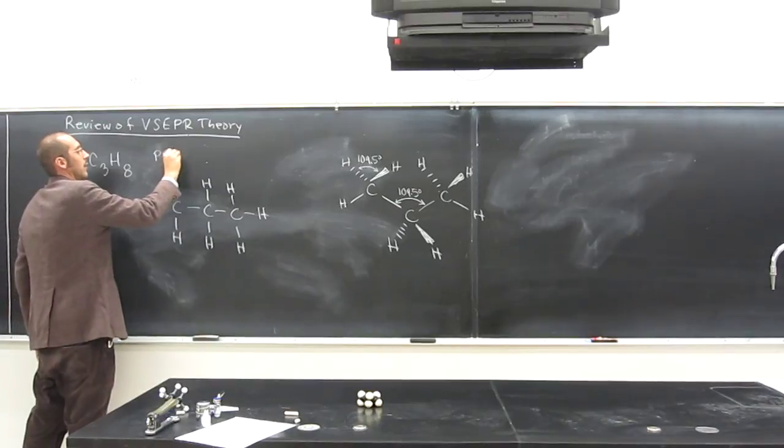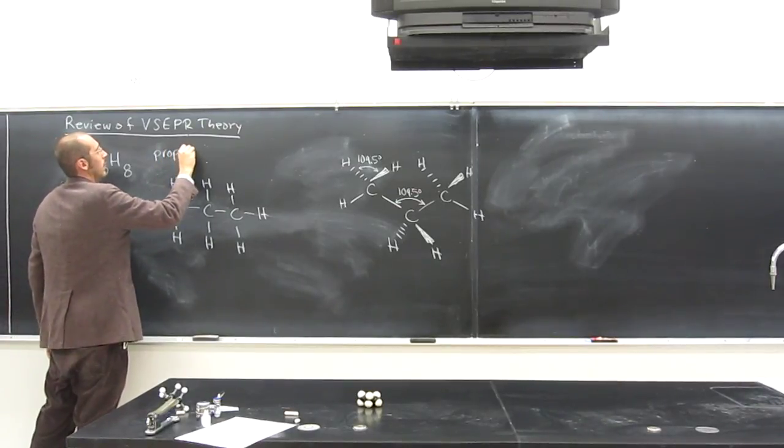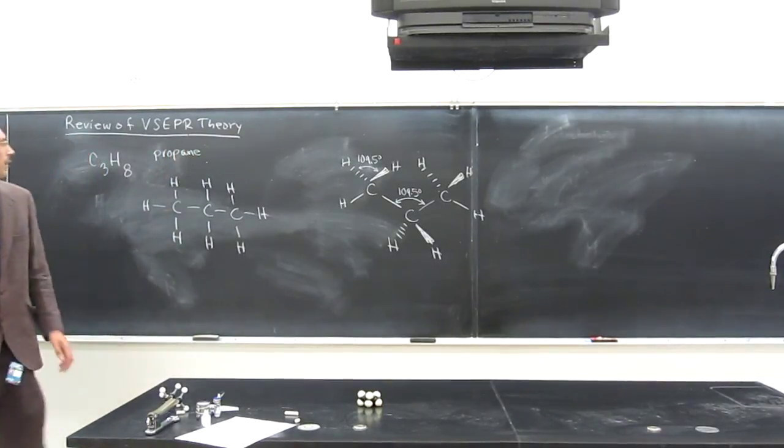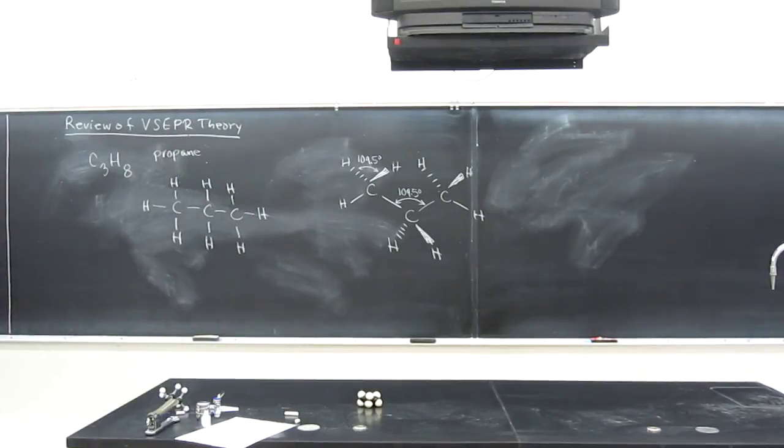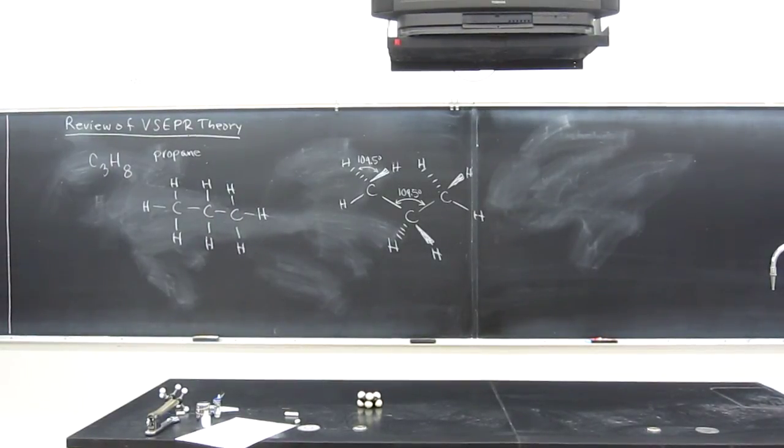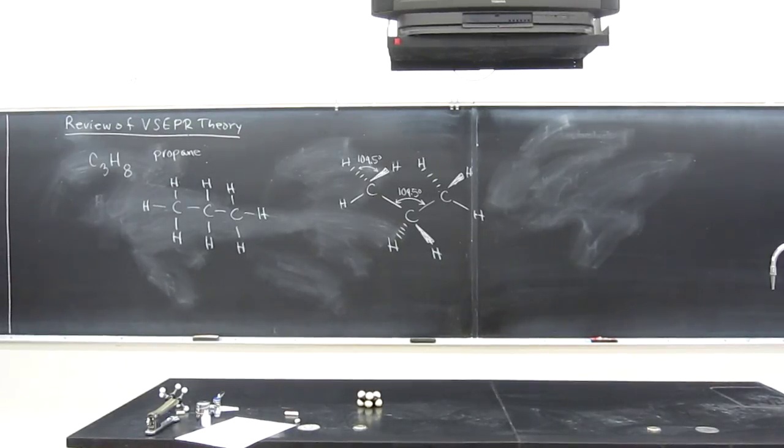Okay, so this molecule is propane. This is the stuff that you grill on in the backyard grill or whatever. If you're like Hank Hill, right? Propane and propane accessories. Are there any questions? Oh, we could draw, let's draw the condensed structural formula and the bond line formula before we turn this one off.